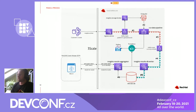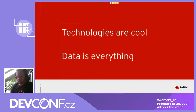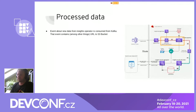The overall architecture of the pipeline looks like this — don't be scared by the somewhat chaotic architecture, I'll talk about it shortly. It's not that hard. Technologies are cool, and we as engineers like to use them. But in reality, data is everything, so let's talk about the data processed by the pipeline.